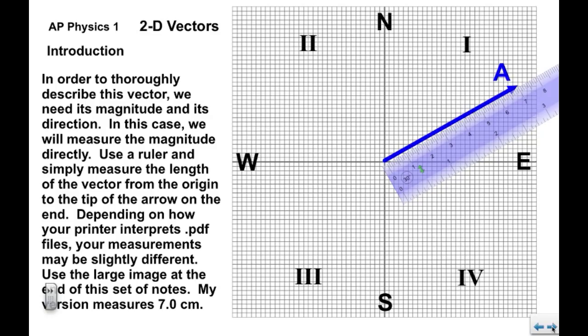Now we need to thoroughly describe this vector, so we need its magnitude and its direction. We're going to measure the magnitude directly. Use a ruler and just measure the length of the vector from the origin to the tip of the arrow. Depending on how the printer interpreted the PDF file, your measurement may be slightly different. Mine is seven centimeters.